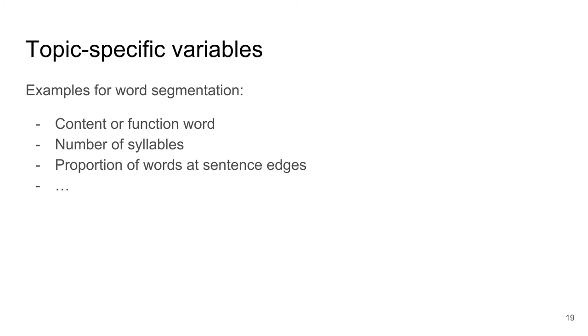The final group of variables is specific to your research question. Ask yourself what might moderate my effect? What is theoretically of interest? Which practical feature of the stimuli is relevant? Examples from word segmentation include whether the target was a content or a function word, the number of syllables, which proportion of words occurred on sentence edges and so on.